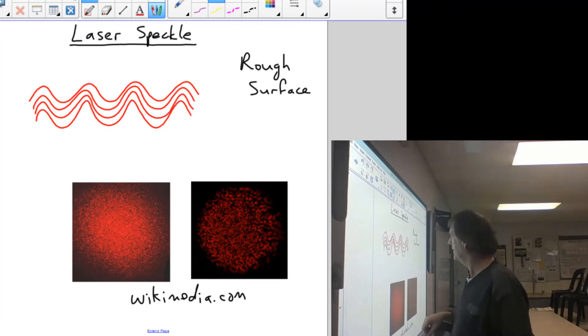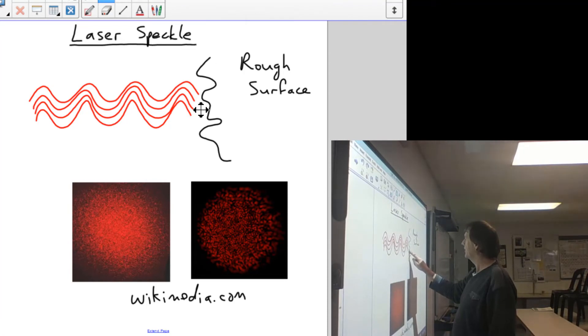So when it hits a rough surface, which is actually at different depths, as this reflects off that surface there, you're going to get a path difference to the eye that's varied.